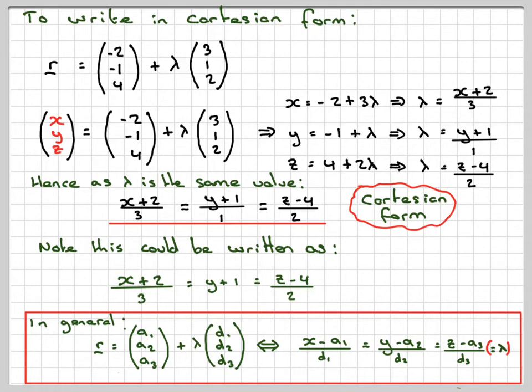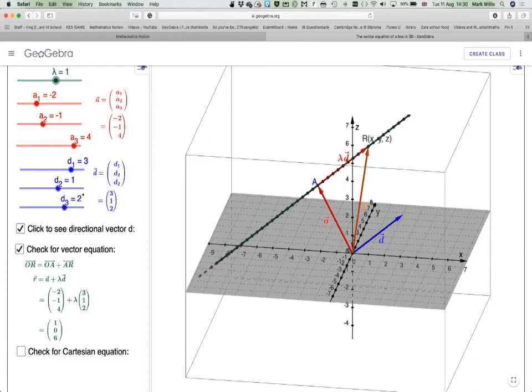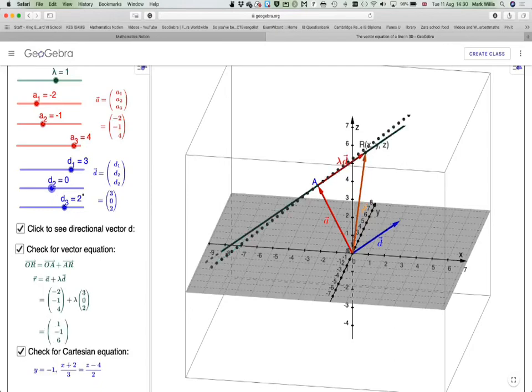What happens if, let's say, D₂ is equal to 0? Because that will become (Y + 1)/0, which doesn't make sense. So in the Cartesian form, if D₂ = 0, then Y = -1 as a separate equation, and you'd have (X + 2)/3 = (Z - 4)/2. So you need to be careful in that case if something in the directional vector is equal to 0.